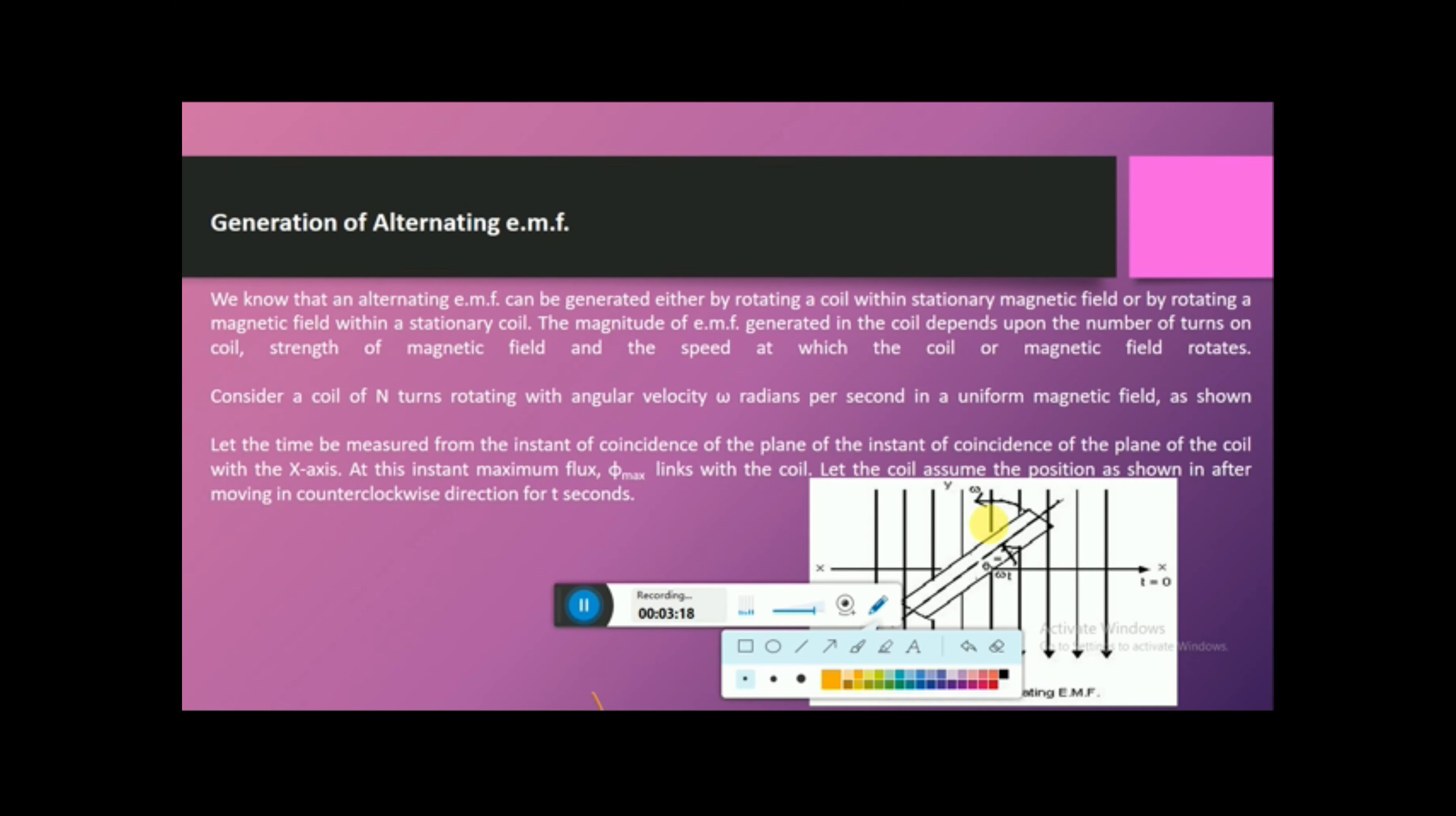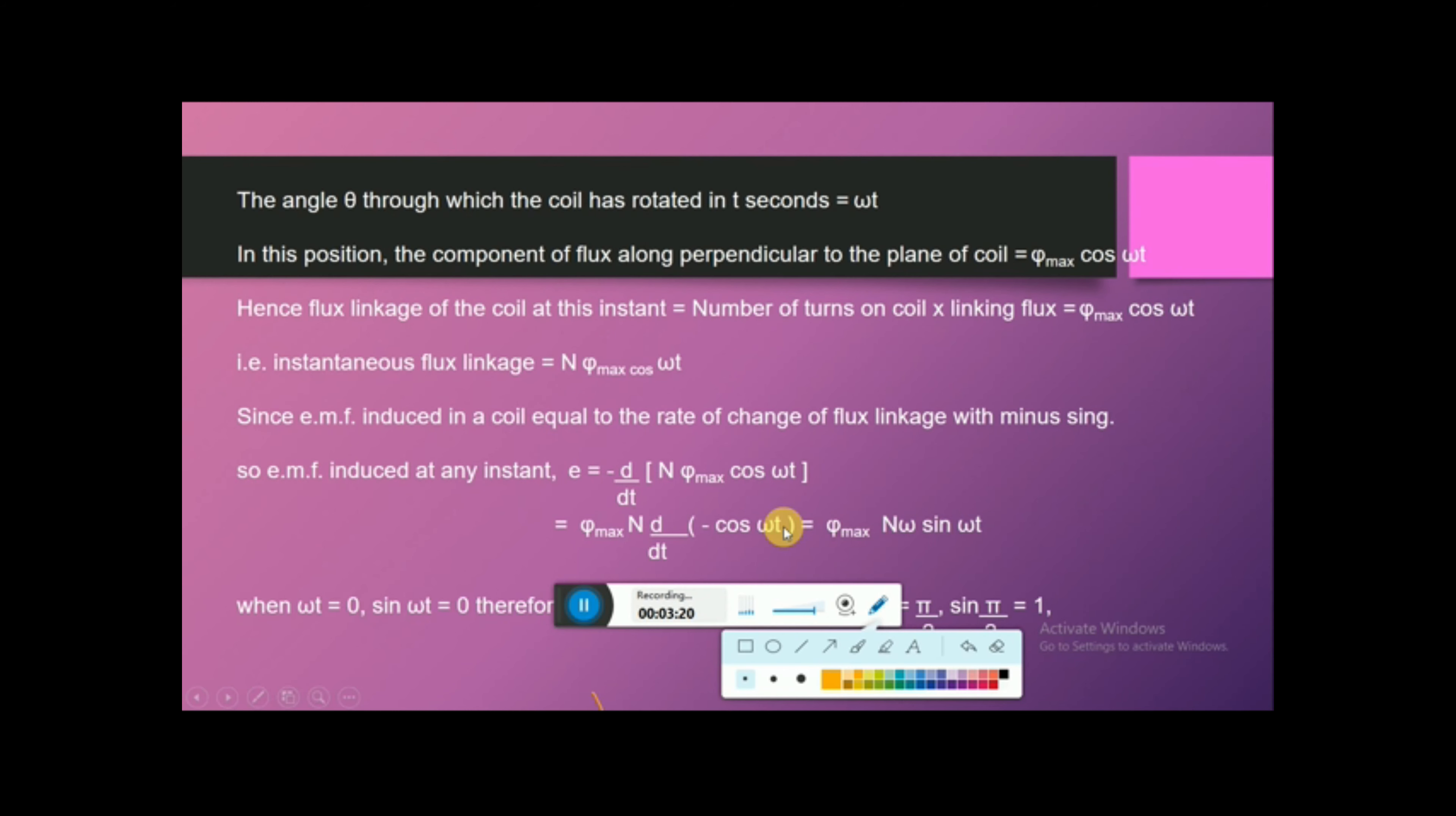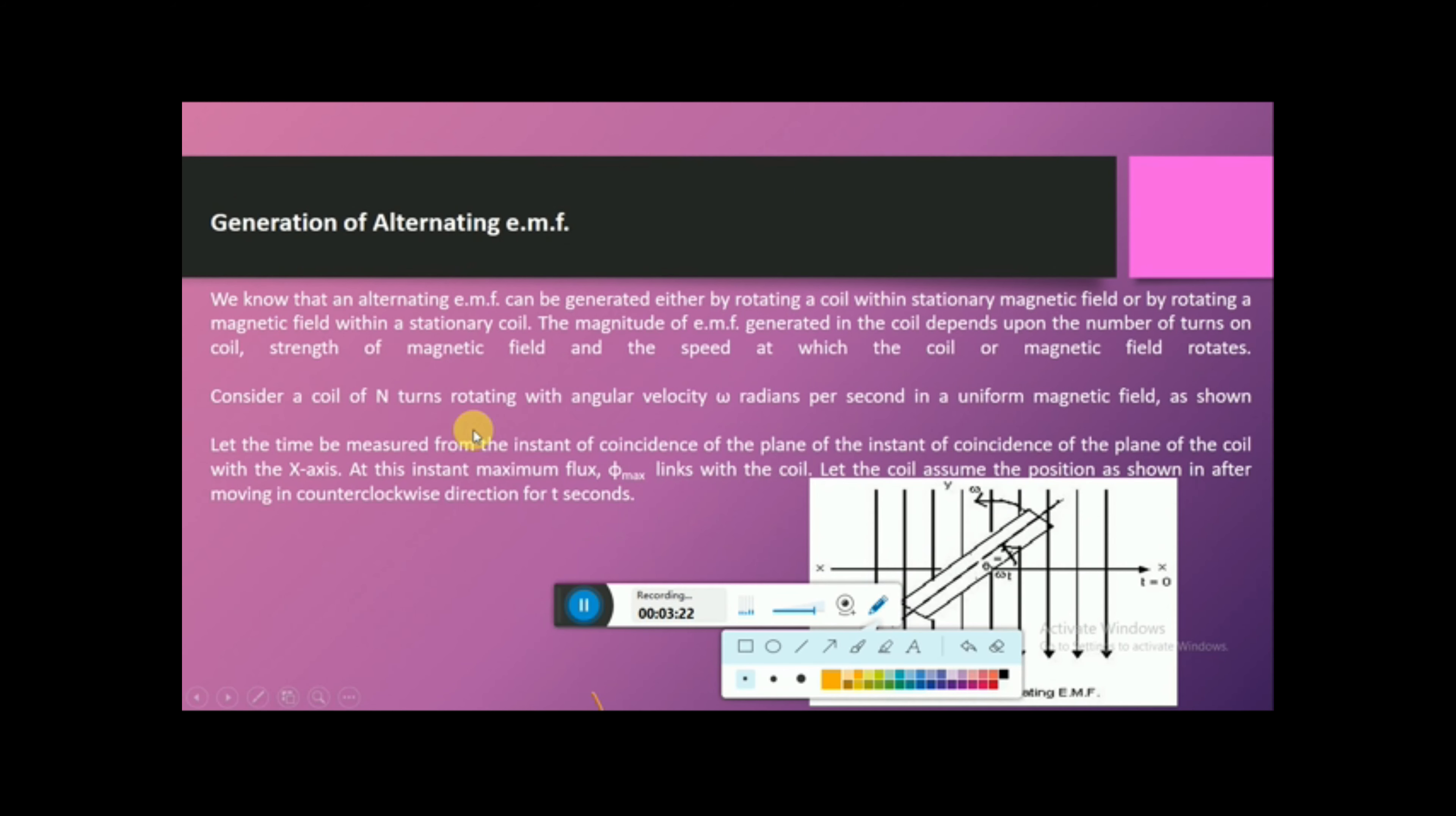We know that an alternating EMF can be generated either by rotating a coil within stationary magnetic field or by rotating magnetic field within a stationary coil. The magnitude of EMF generated in coil depends upon the number of turns on coil, strength of magnetic field, and the speed at which the coil or magnetic field rotates.